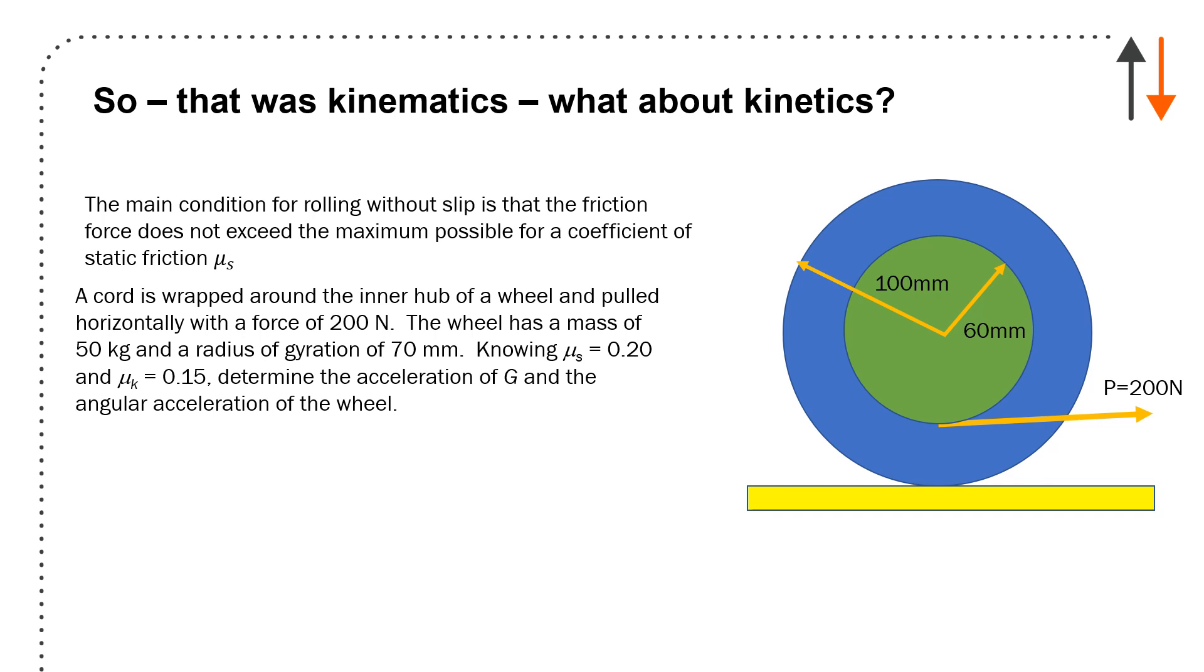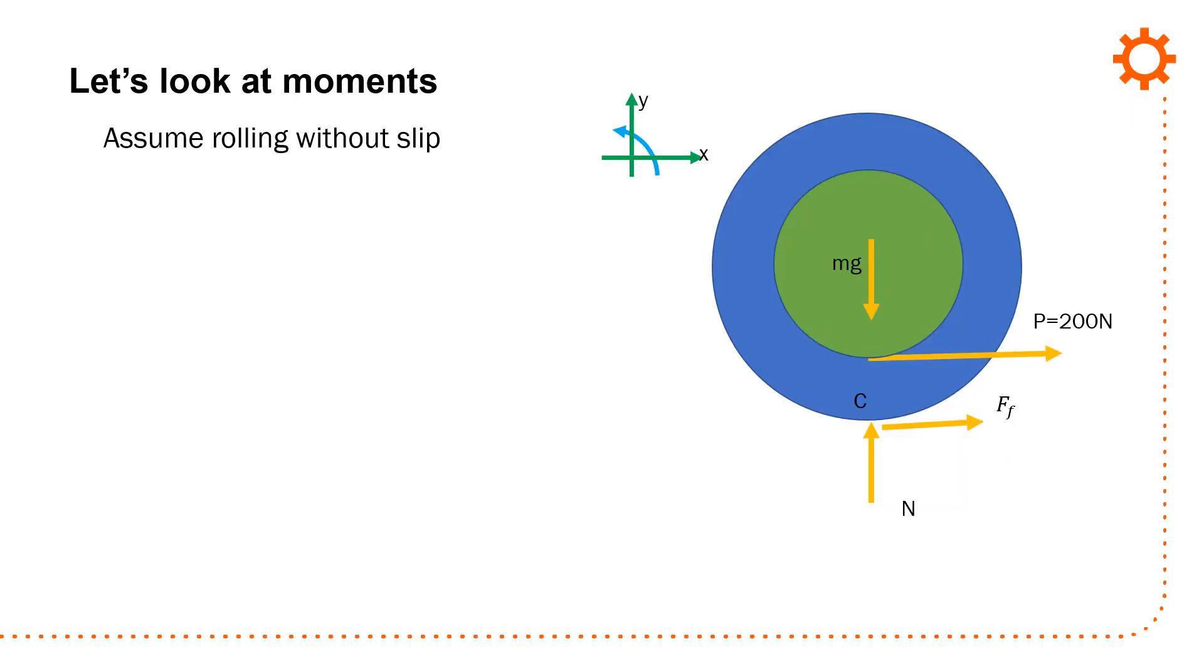A standard problem we look at is a cord is wrapped around the inner hub of a wheel and pulled horizontally with a force of 200 newtons. The wheel has a mass of 50 kilograms and a radius of gyration of 70 millimeters. Please know what a radius of gyration is. I'll use it in this problem. This is really important to know. Knowing mu sub s equals 0.2 and mu sub k equals 0.15, so static friction is 0.2, kinetic friction is 0.15, determine the acceleration of g, which is the center of the wheel, and the angular acceleration of the wheel.